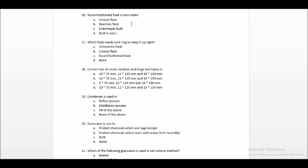Round bottom flask is also called conical flask, reaction flask, Erlenmeyer bulb — both B and C. The reaction flask is called round bottom flask and it is also called Erlenmeyer bulb. The answer is both B and C.